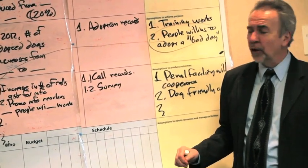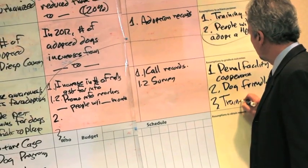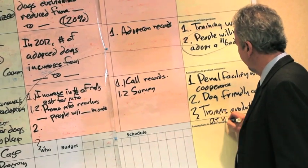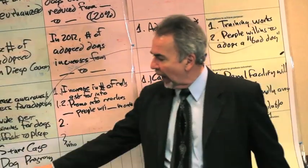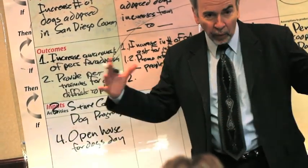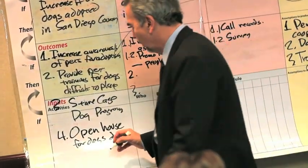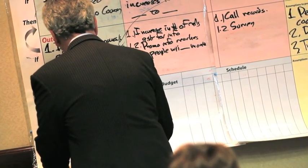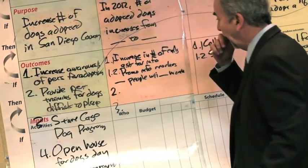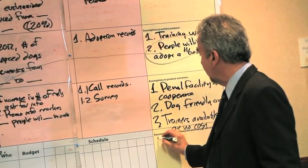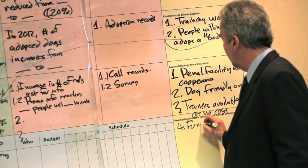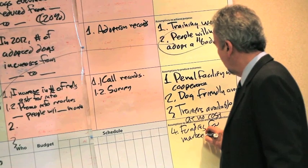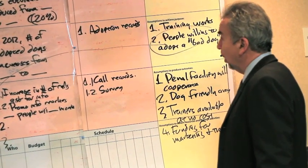Trainers are available — trainers available at no cost. Does that suggest the need for another outcome on a trainer recruitment program? So we have trainer recruitment. How about funding for the marketing awareness program? We can get funding for marketing and training.